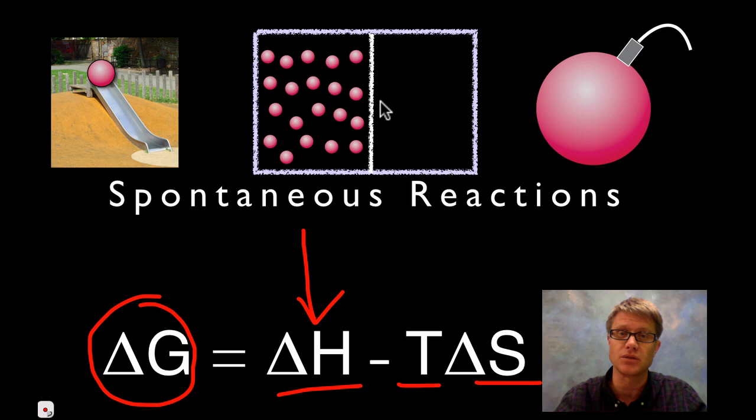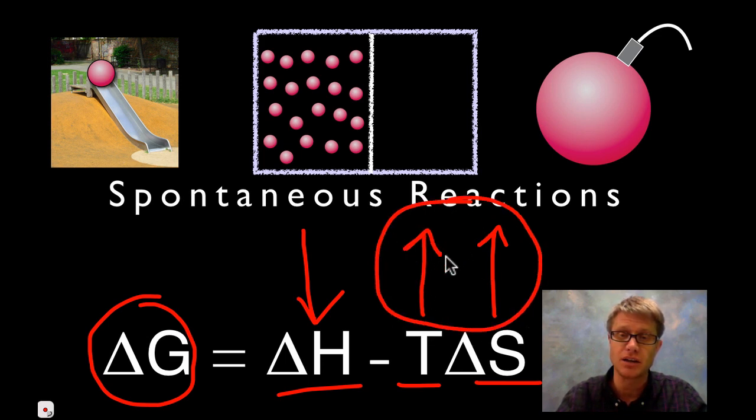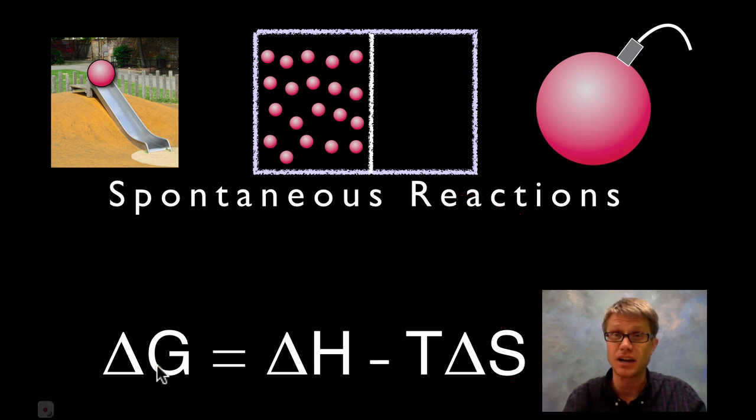In the next example with the molecules spreading out, those increased. What else can increase the spontaneous reaction? An increase in temperature. If you increase these two values and we're subtracting it from the total energy, our delta G is going to be negative.